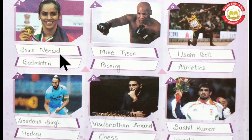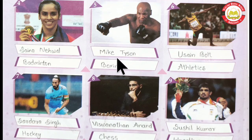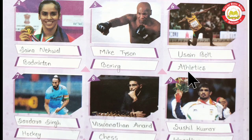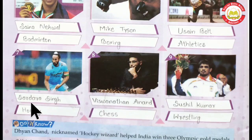Fourth one is Saina Nehwal, who belongs to Badminton. The fifth one is Mike Tyson, who belongs to Boxing. Sixth one is Usain Bolt, who belongs to Athletics — a group of sporting events that involve competing in running, jumping, throwing, and walking. Number seven is Sardara Singh, who belongs to the Indian Hockey team.